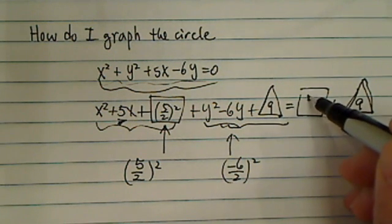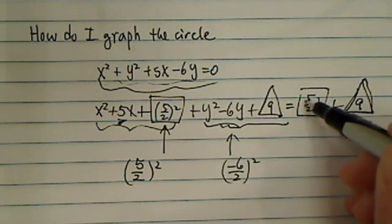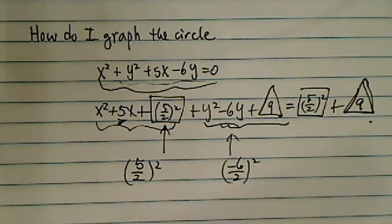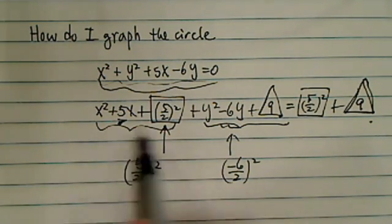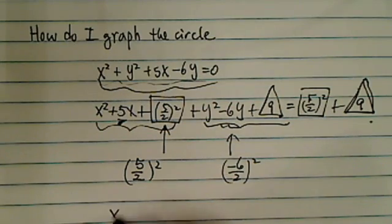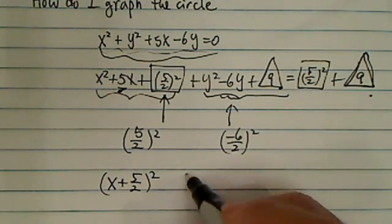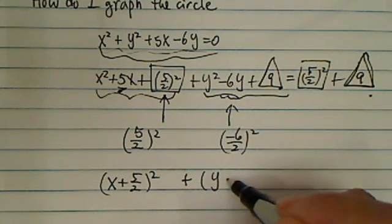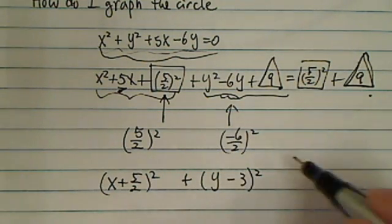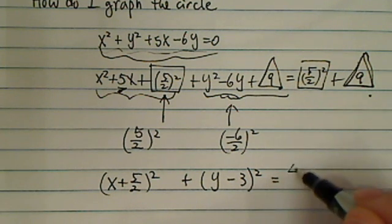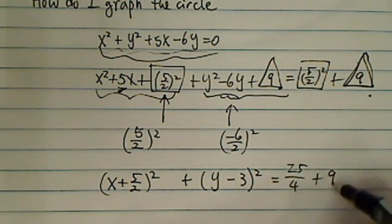The number I need to add is half of the 6 squared. This becomes a 9. So I have a 9 here. I have a 5 over 2 squared. Now what I want to do is group those first three terms. I have x plus 5 over 2 squared. That's a perfect square. This is what I mean by complete the square. I have y minus 3 squared here. To figure out here, it's easy. It's 25 over 4 plus 9.